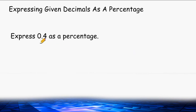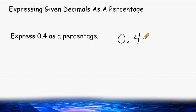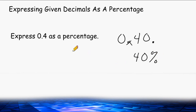We must be careful: many people see 0.4 and think the digit after the decimal is the percentage, believing 0.4 equals 4%. But it actually equals 40%. Following the rule of moving the decimal two spaces to the right, we add an extra zero to have two place values to move over. So 0.40 becomes 40, and with the percentage symbol that's 40%. So 0.4 is equivalent to 40%.